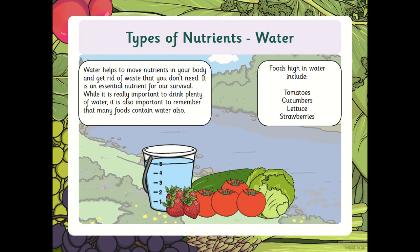Water helps to move nutrients in your body and get rid of waste that you don't need. It is an essential nutrient for our survival. While it's important to drink plenty of water, many foods also contain water. Foods that are high in water include tomatoes, cucumber, lettuce, and strawberries. My son isn't very good at drinking water, but he does like cucumbers, so I give him rather a lot of cucumbers — especially when I notice he's not drinking as much.